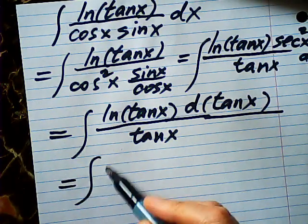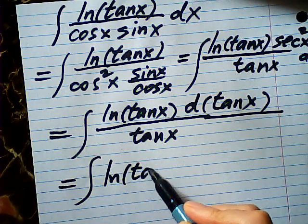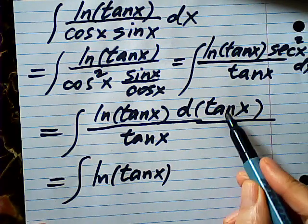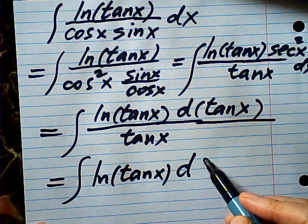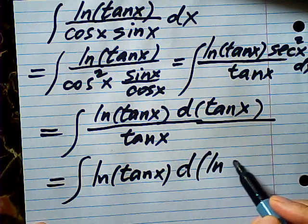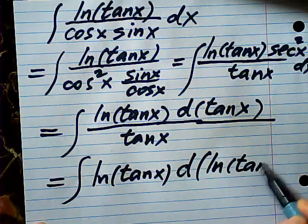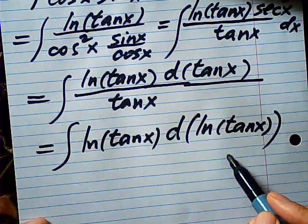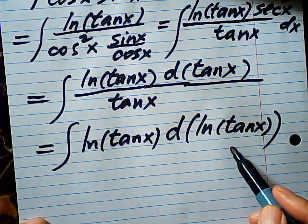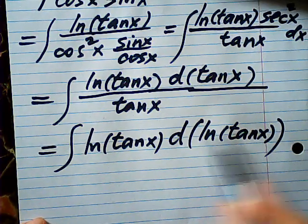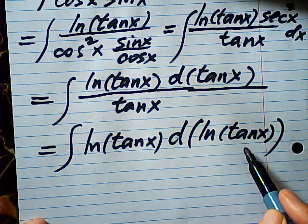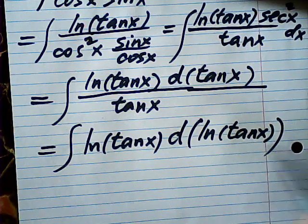So this one is equal to log tangent x. This one over this one is a d log tangent x, right? Because this derivative is 1 over tangent x. Now this derivative with respect to x is 1 over tangent times the derivative of tangent.